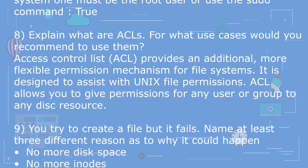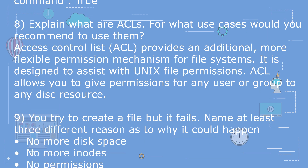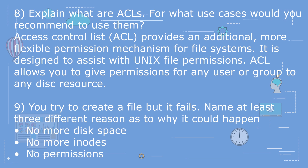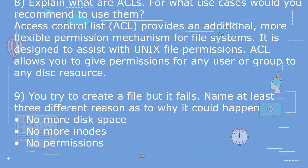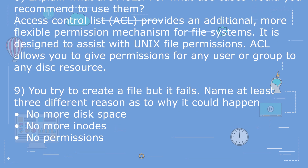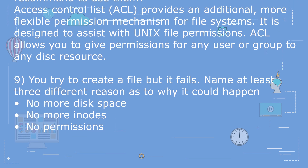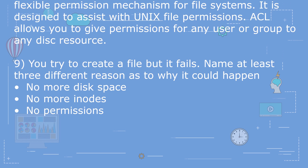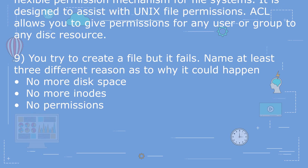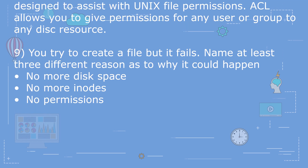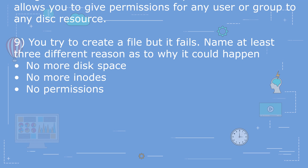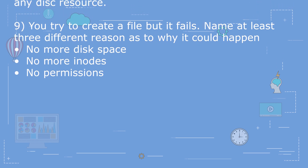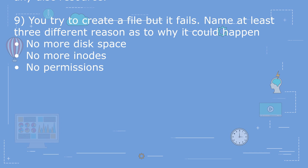Question 9: Explain what ACLs are and for what use cases would you recommend using them? Access Control List (ACL) provides an additional, more flexible permission mechanism for file systems. It is designed to assist with Unix file permissions. ACL allows you to give permissions for any user or group to any disk resource.